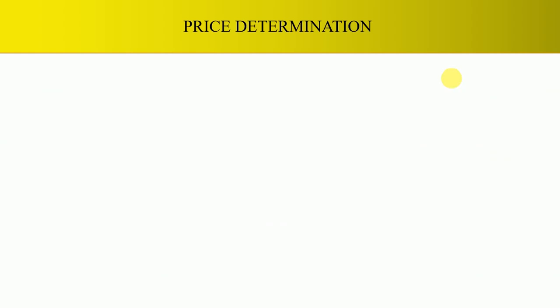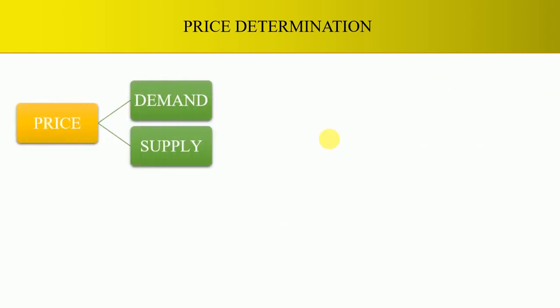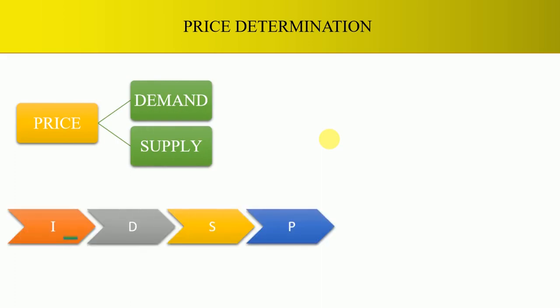Let us examine how microeconomics determines the price of a product. The price of a commodity is basically determined by two forces: demand and supply. When the income of a consumer is higher, they will demand more — consumers are willing to spend more on goods and consumption. When demand is higher, supply is also higher because this is the time when producers can increase the price of goods and derive maximum profit out of the sale of goods and services.